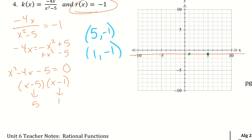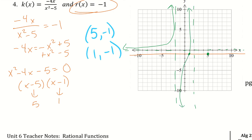This function has three sections with two vertical asymptotes at negative root 5 and positive root 5, and a horizontal asymptote at 0. The graph goes up on the outer sections, and the center section crosses the horizontal asymptote — remember, it is okay for the middle part of the graph to cross the horizontal asymptote.